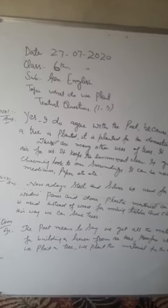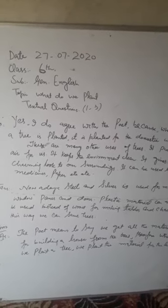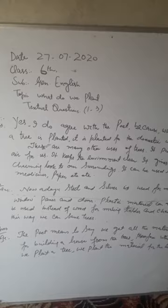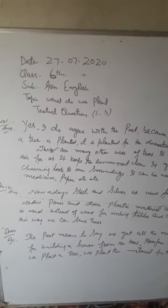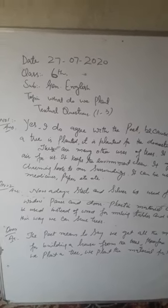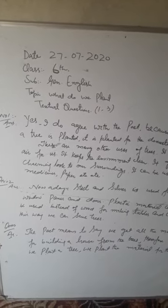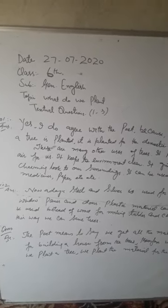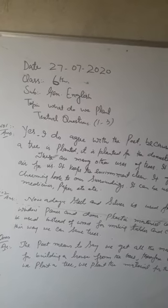Assalamualaikum dear students. Today is 27th of July 2020. This is Class 6, subject General English, topic 'What Do We Plant.' We will see textual questions today — question number one, two, and three — because we have completed the poem. So we will see the exercise today.